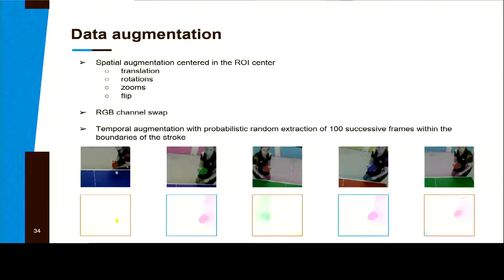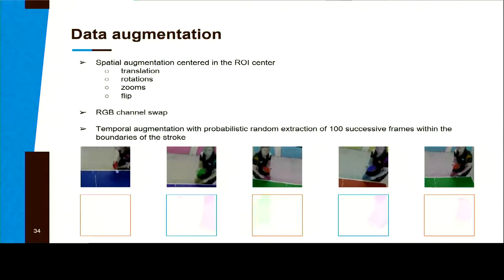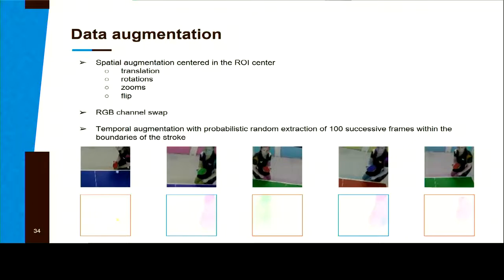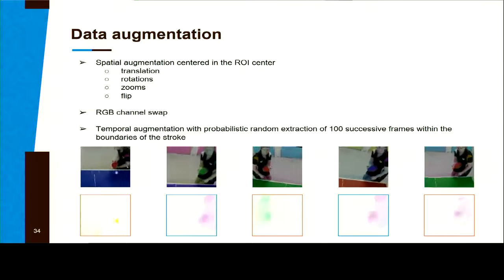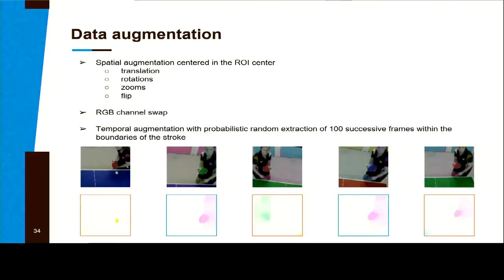We did also temporal segmentation by extracting 100 consecutive frames within the annotations following a Gaussian distribution. As you can see, this is the same stroke. The channel has been swapped, but what's also interesting is the stroke is not happening at the same time even though they start at the same moment. This is due to our data augmentation.